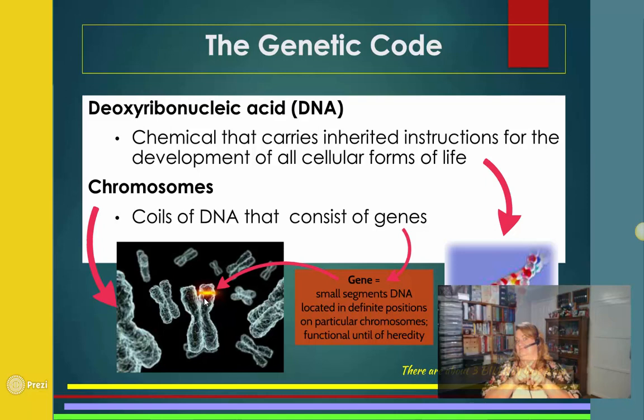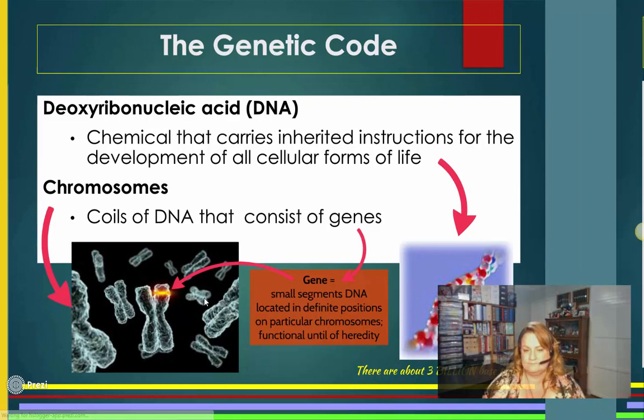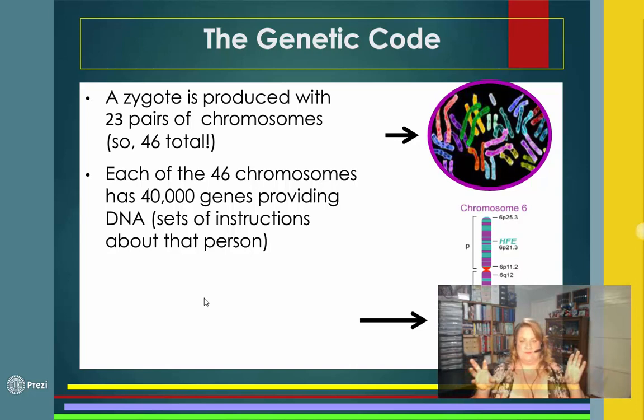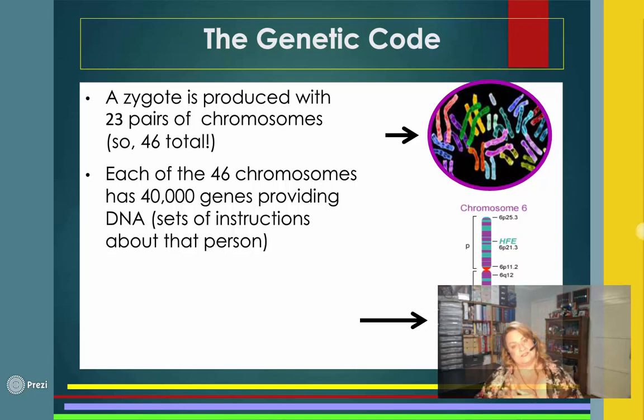A zygote forms when the male and female gametes come together and has 23 pairs of chromosomes — 46 total. Remember 23 pairs, 46 total — you will be tested on this. It has about 40,000 genes providing that blueprint.